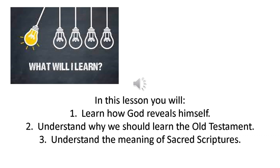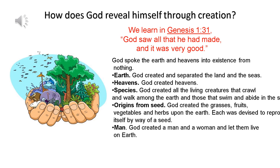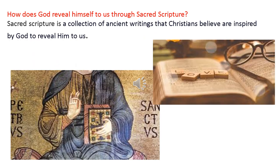You will understand the meaning of sacred scriptures. First, let's find out how God reveals himself through creation. If we refer to the book of Genesis, 'God saw all that he had made and it was very good.' God spoke the earth and heavens into existence from nothing. He created and separated the land and the seas, the heavens, and all living creatures that crawl, walk, swim, and abide on earth. He created grasses, fruit, vegetables, and herbs. At the end, he created a man and a woman and let them live on earth.